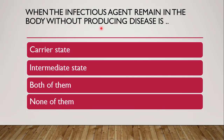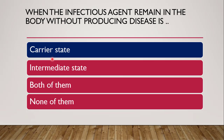Next question: when the infectious agent remains in the body of the host without producing disease — meaning the agent is present but has shown no symptoms — the correct answer is carrier state. Due to immune disorders, low resistance, or improper treatment, a person can carry the disease. A carrier looks like a healthy person but is capable of infecting others.